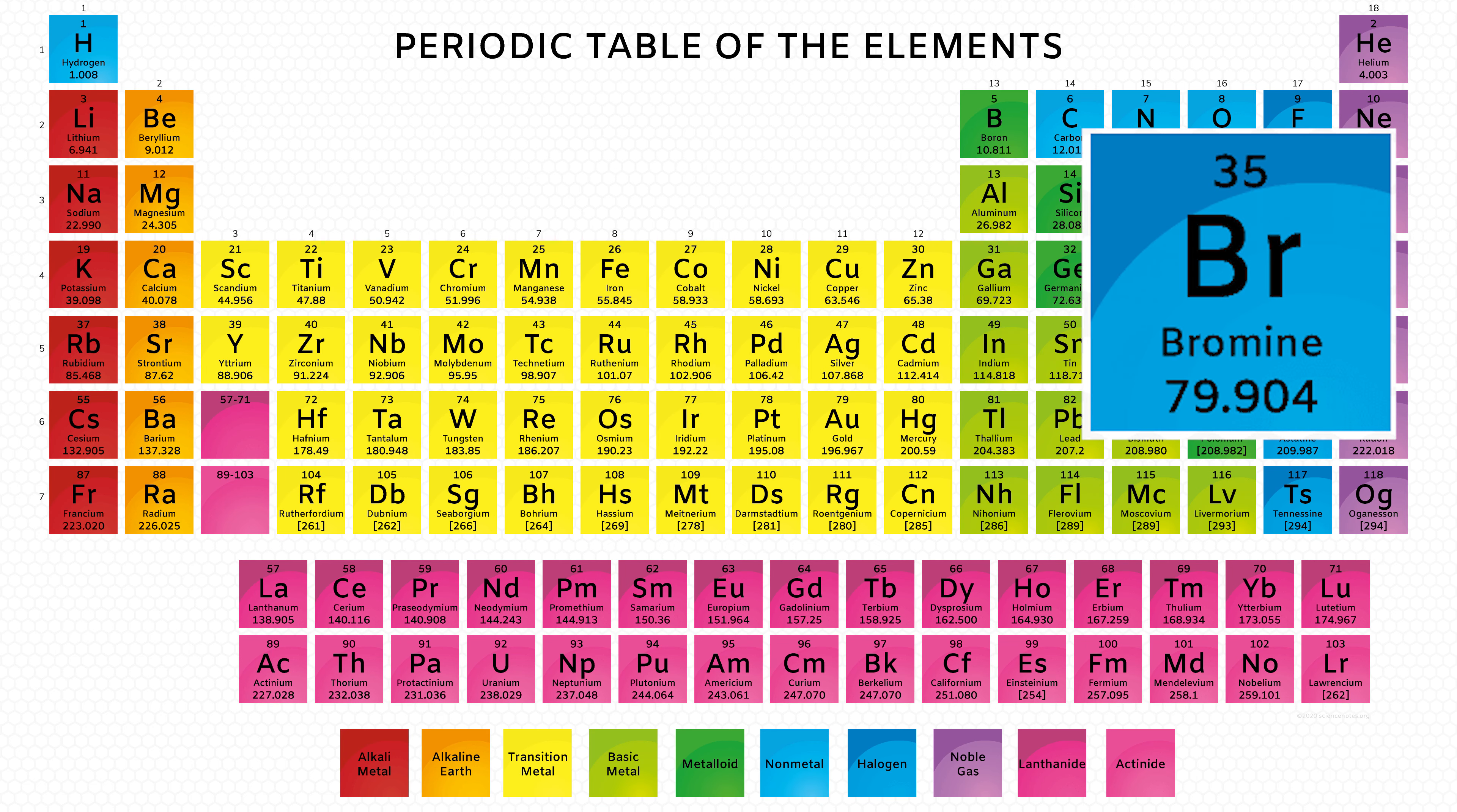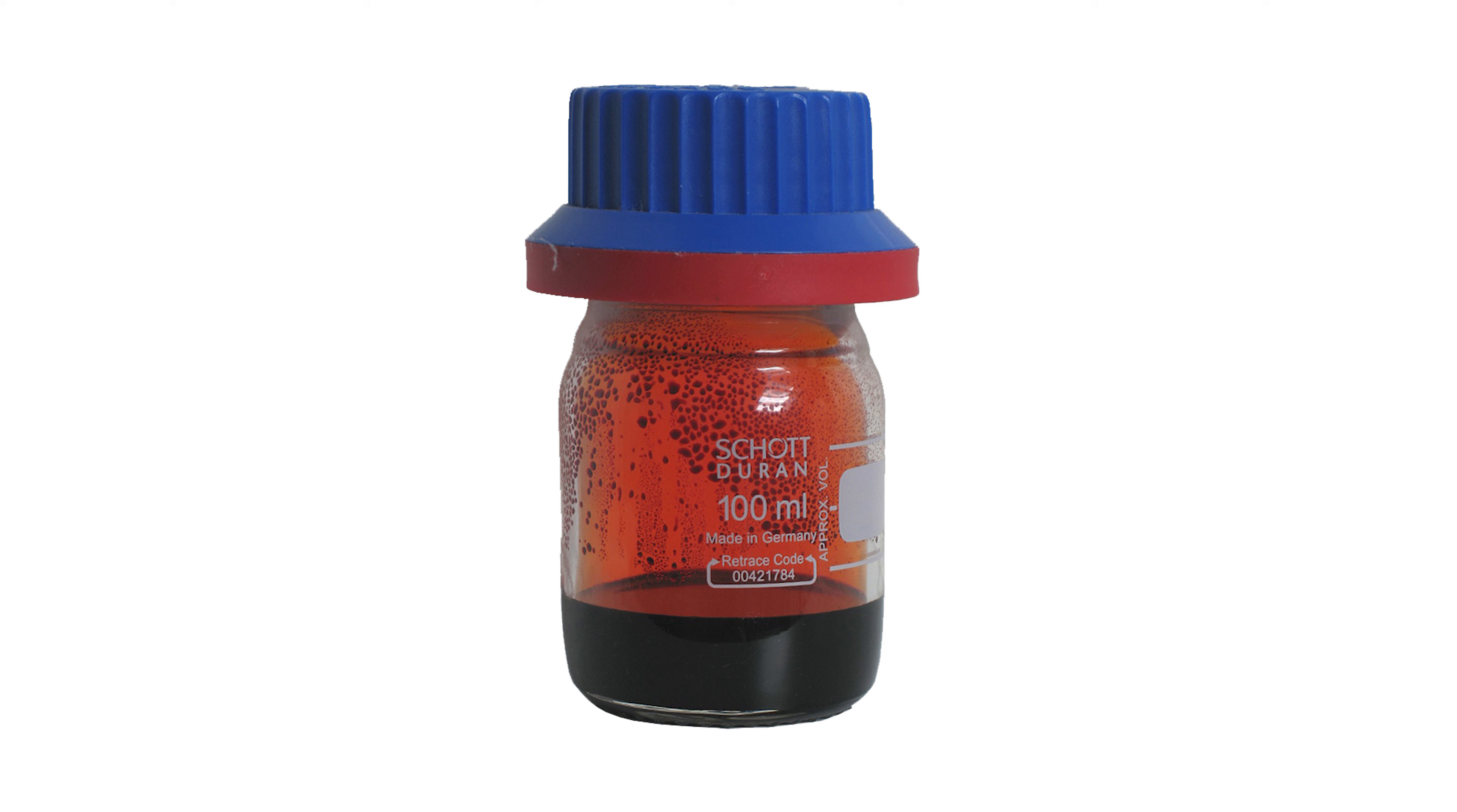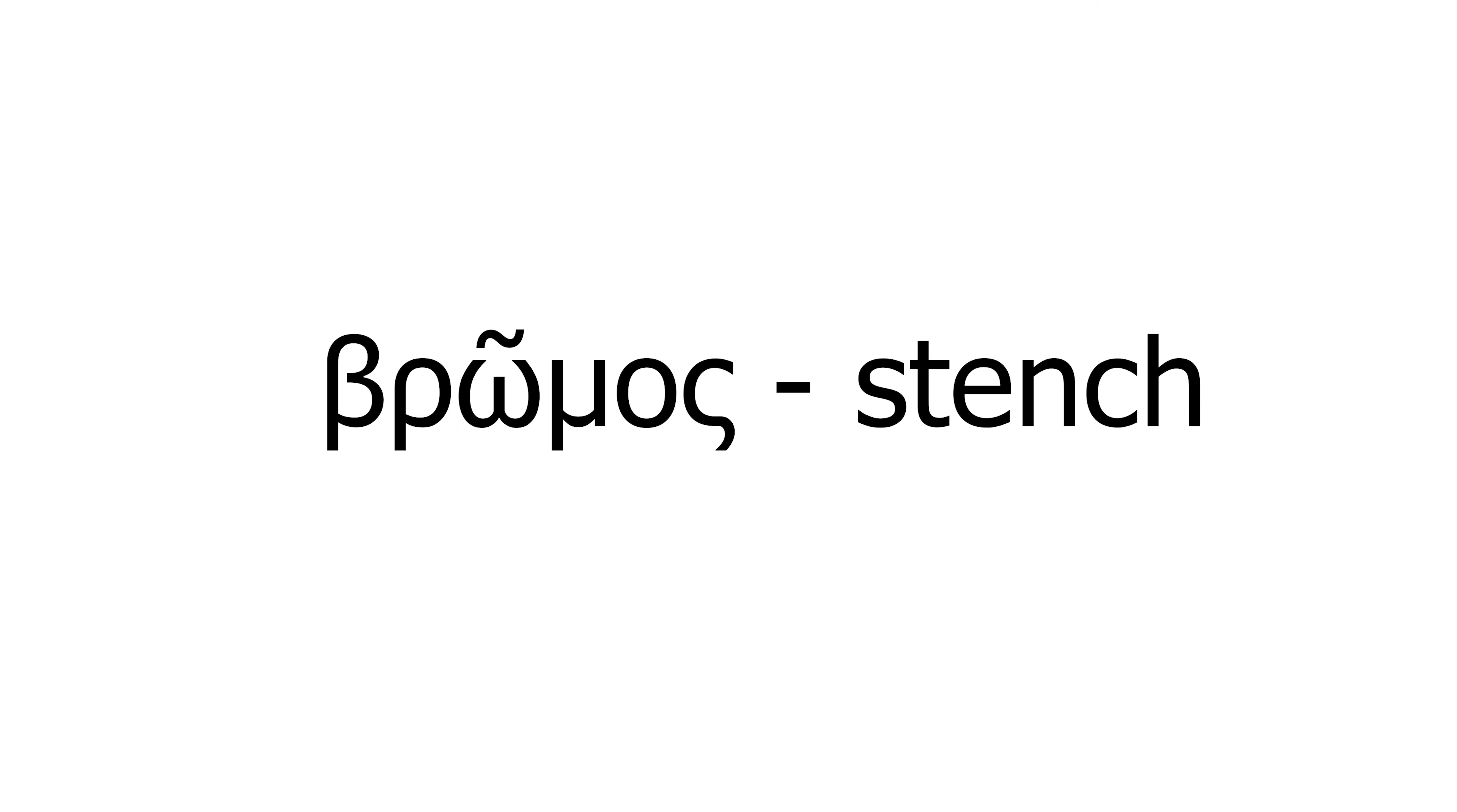Bromine is a chemical element of the halogen group. It's the 35th element in the periodic table, with properties which are kind of in between chlorine and iodine. It's one of the only two elements that are liquid in room temperature, which makes it somewhat unique. The name of bromine comes from the Greek word bromous, which means stench.